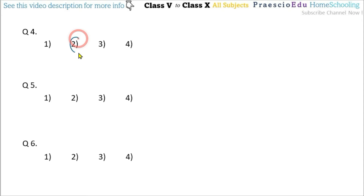Question number 4: How many vertices does a cuboid have? A cuboid has 8 vertices, so option number 2 is the correct one. Question number 5: A cube has how many surfaces? A cube and a cuboid both have 6 surfaces, and this is given in option number 2.